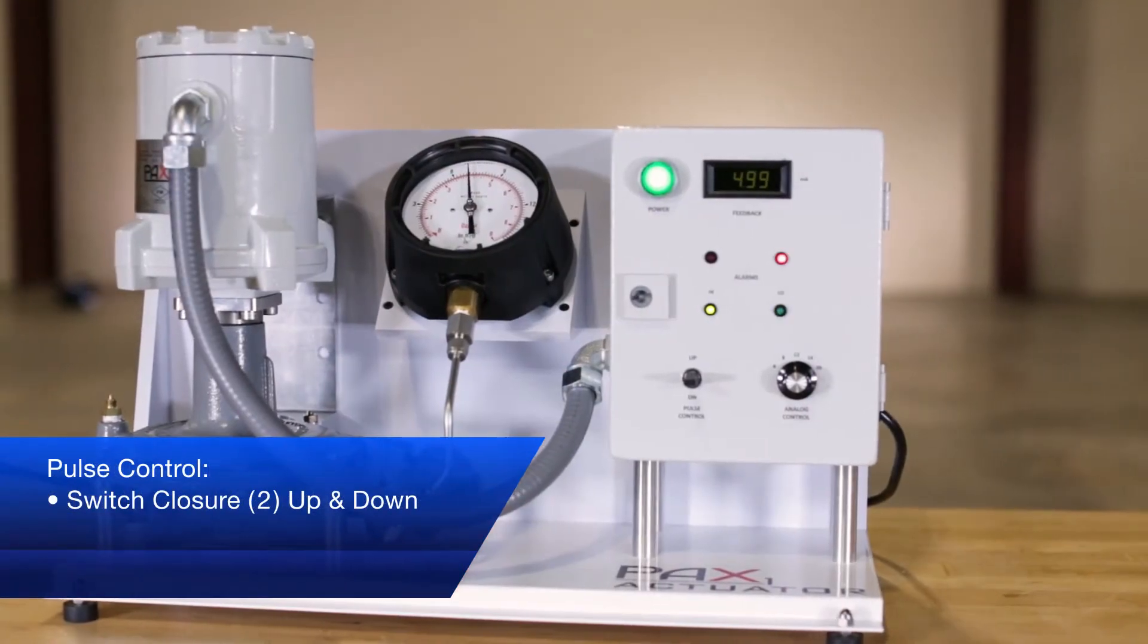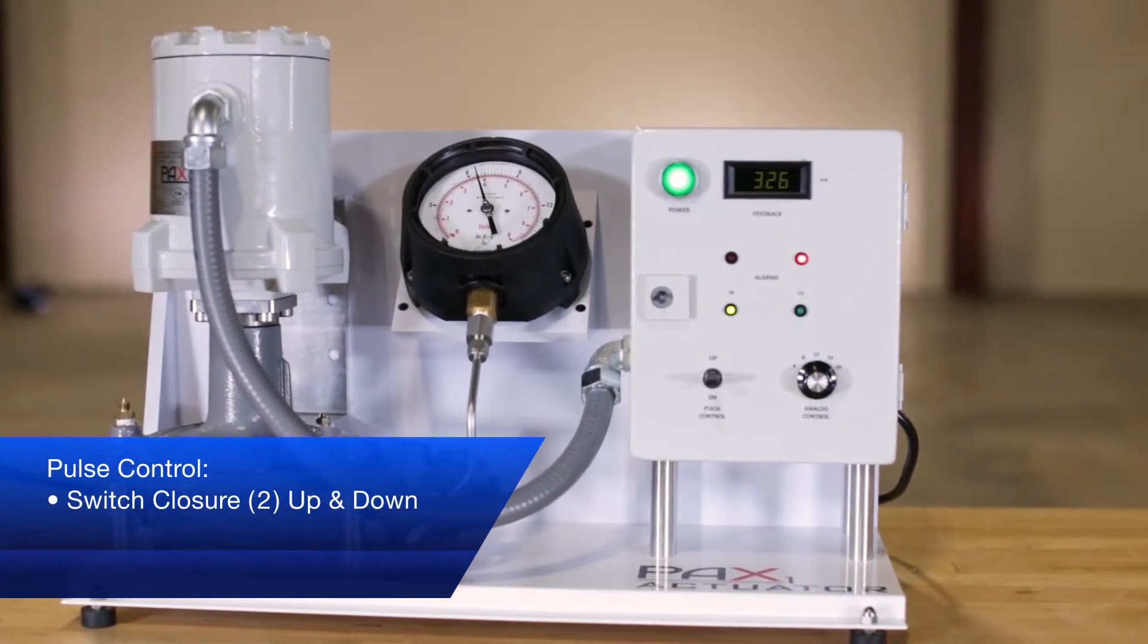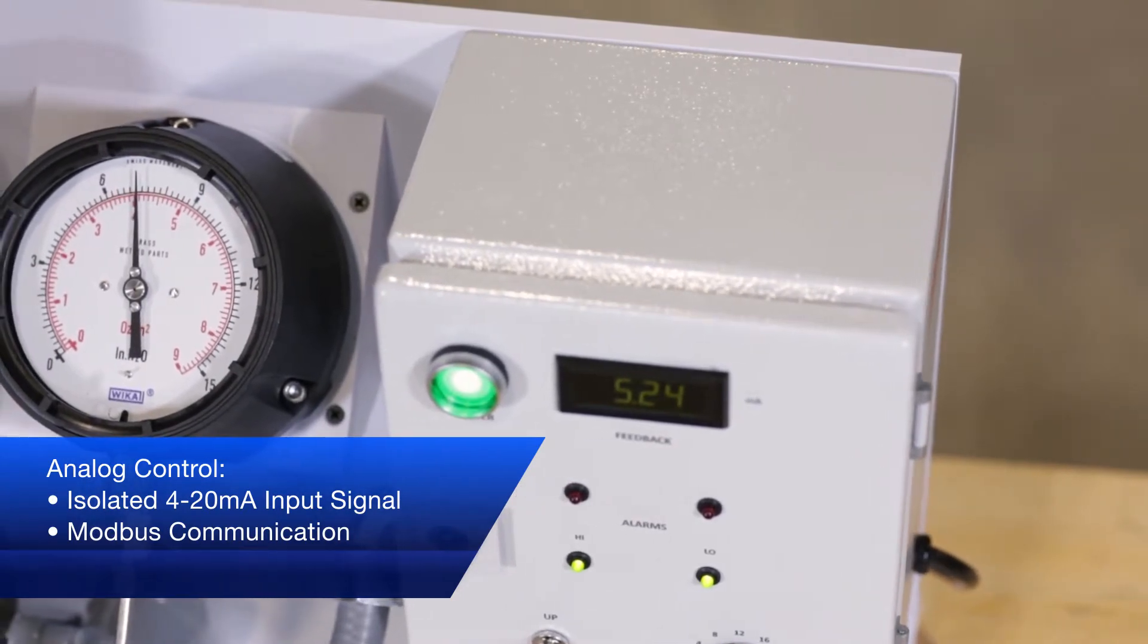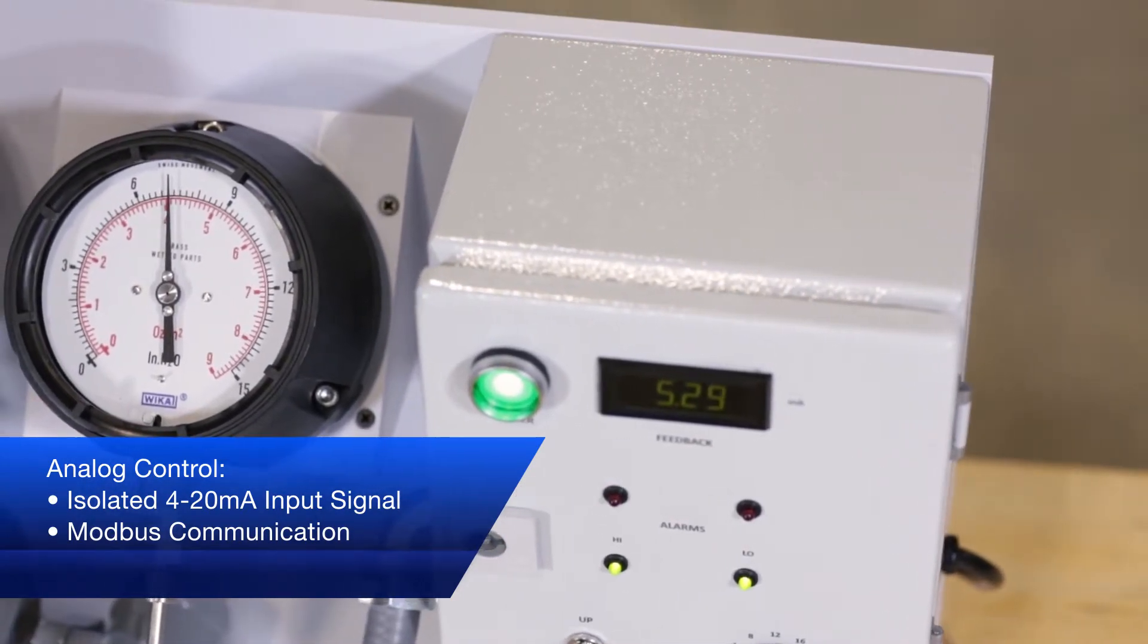The PAX 1 can be configured for pulse or analog control. Analog control can be from either an isolated 4 to 20 milliamp input or Modbus communication.